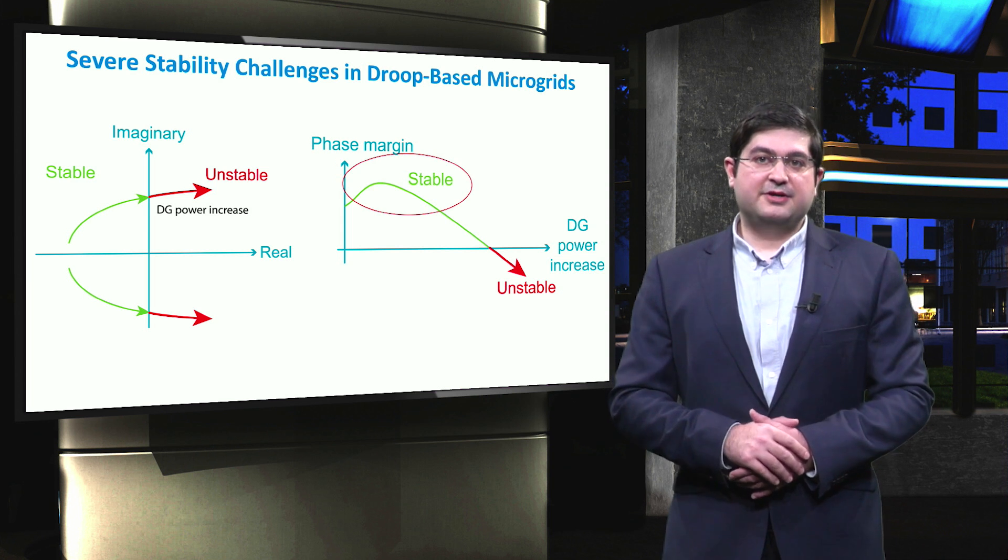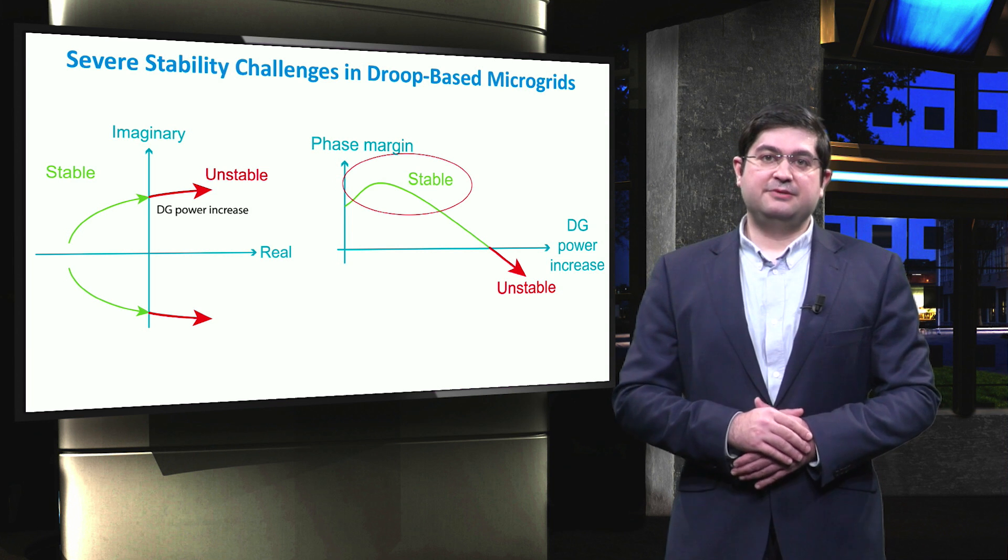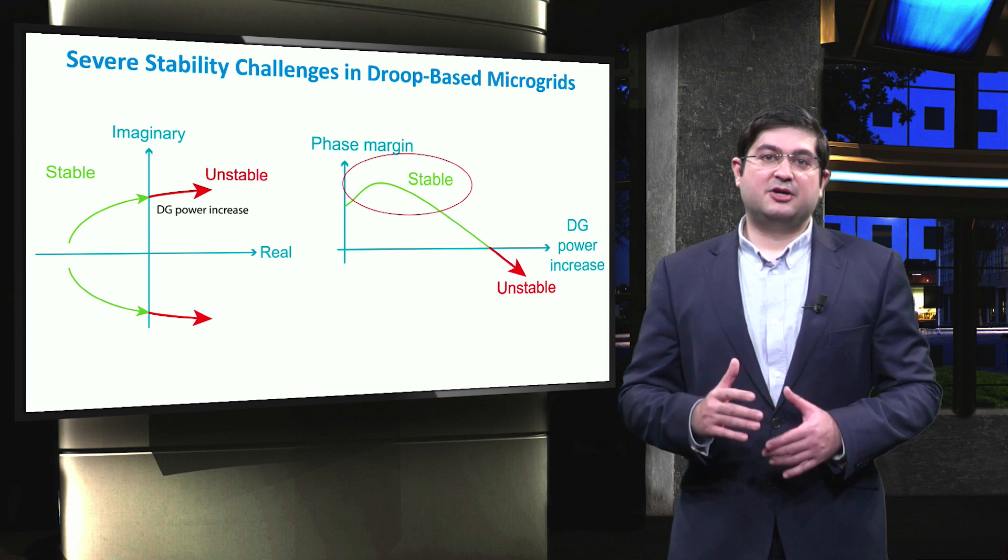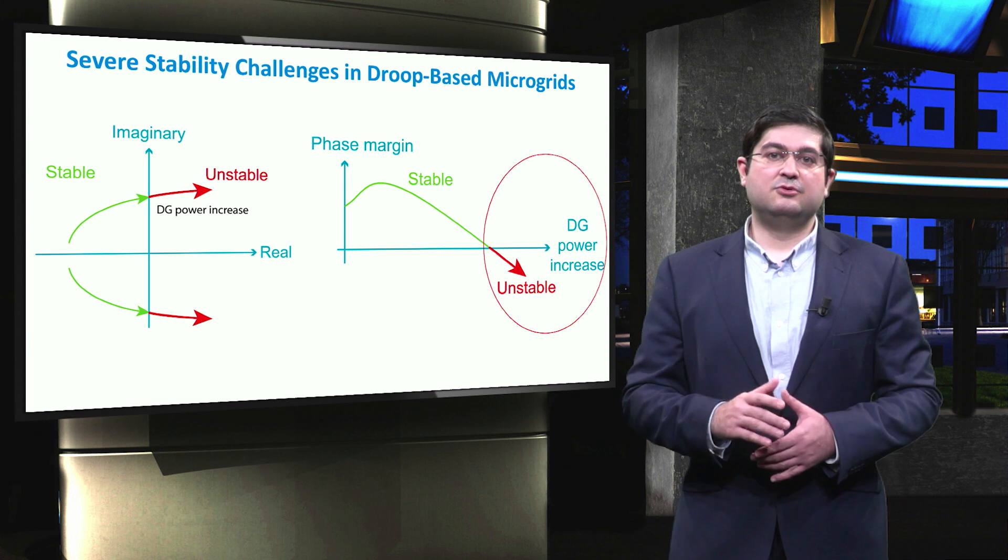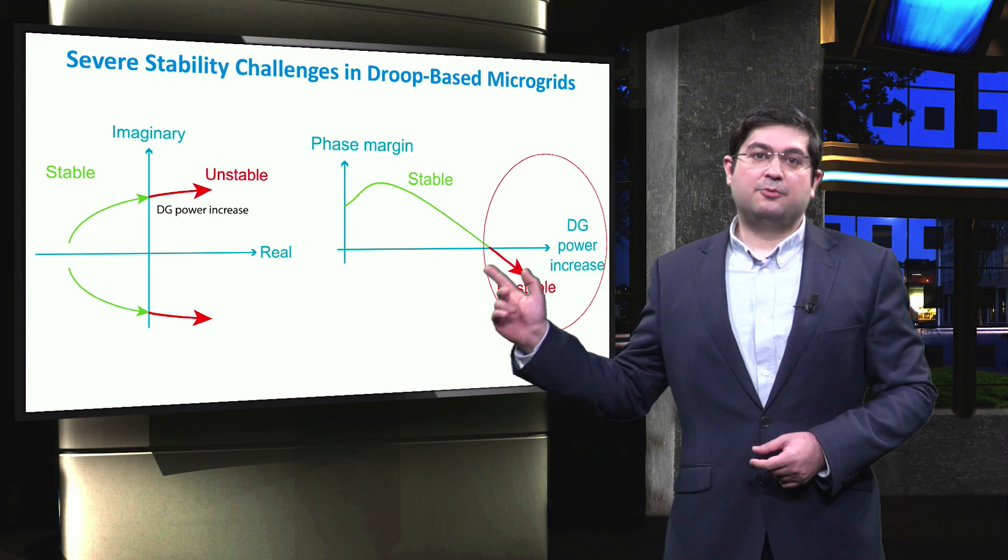It can be seen on the figure on the right that the increase in the penetration rate of DG first helps improve the stability as the phase margin increases. But further increase in DG power will lead to low values of phase margin and eventually unstable operating modes.